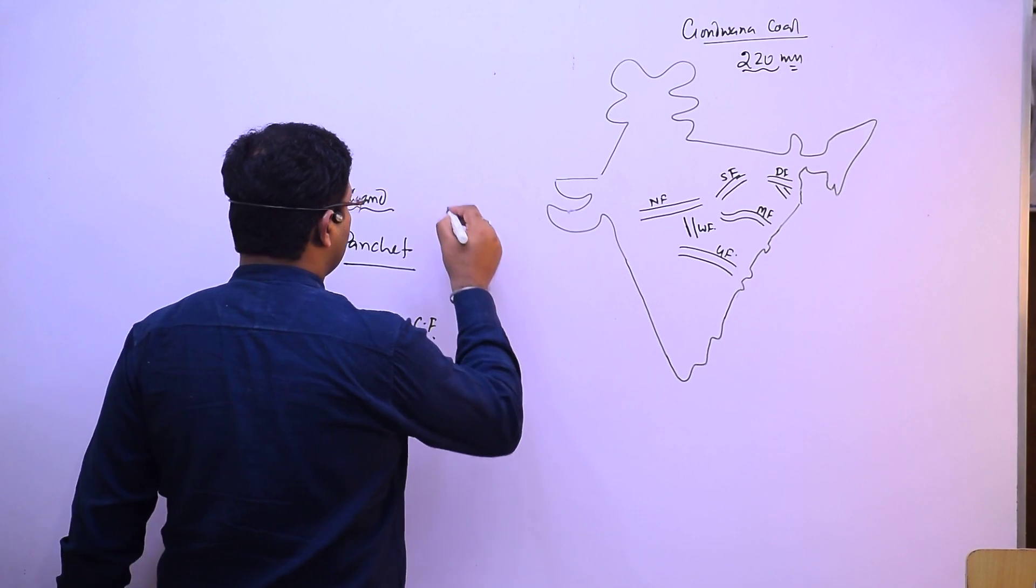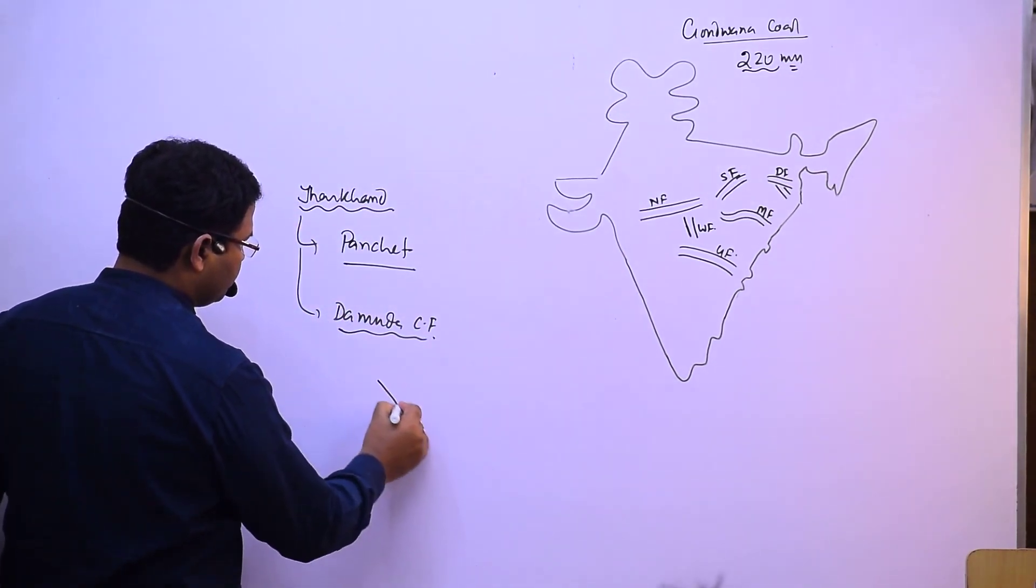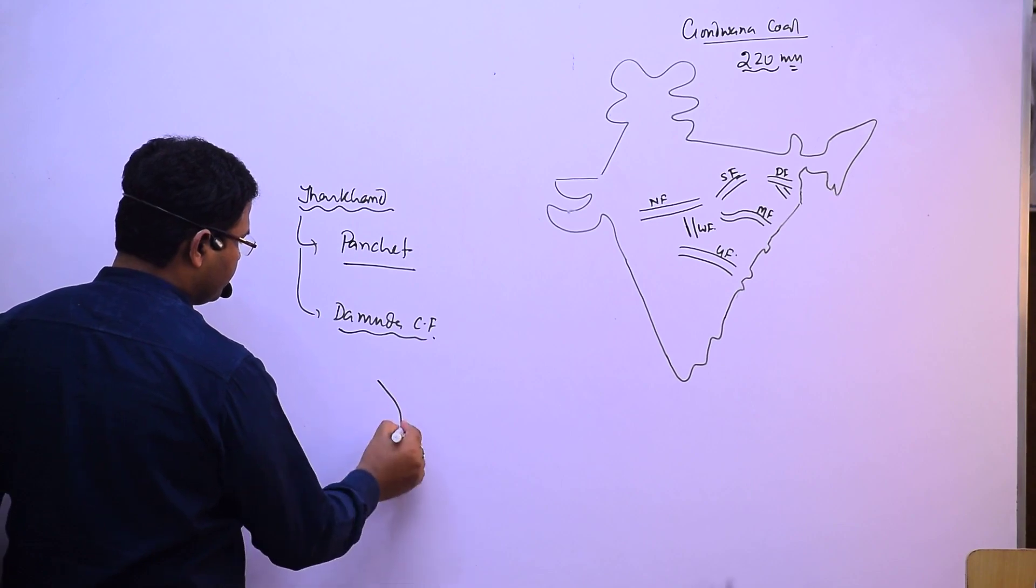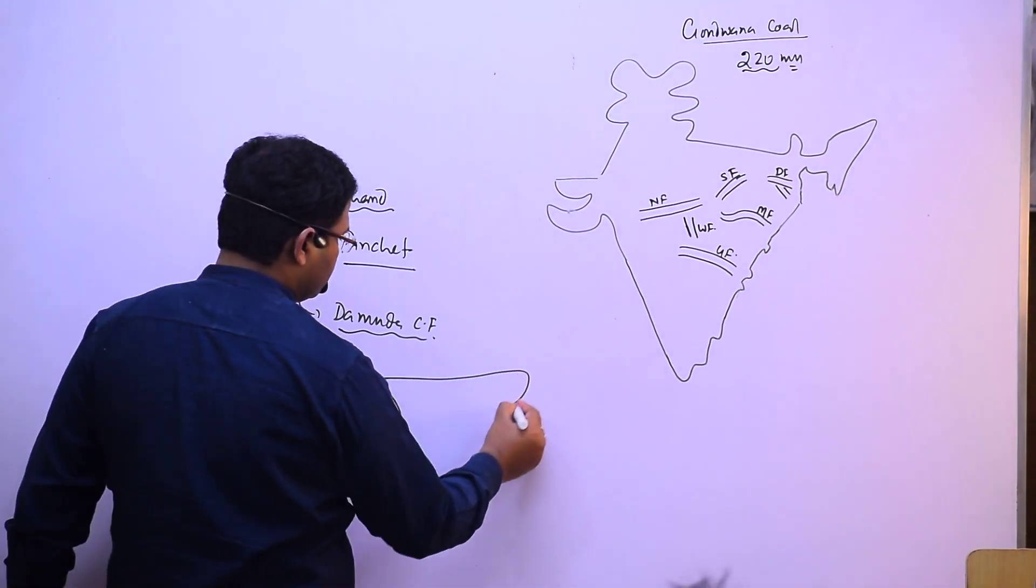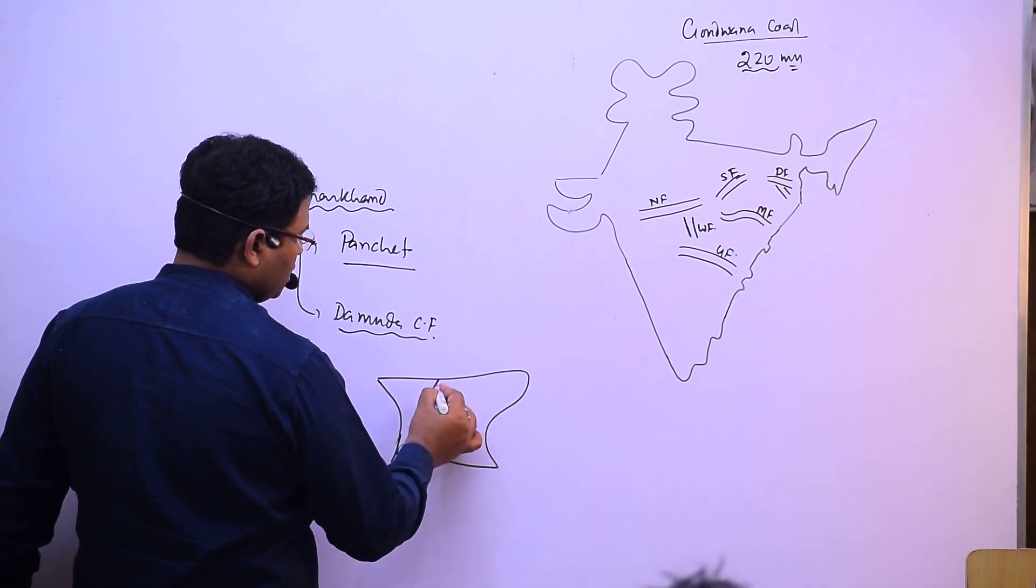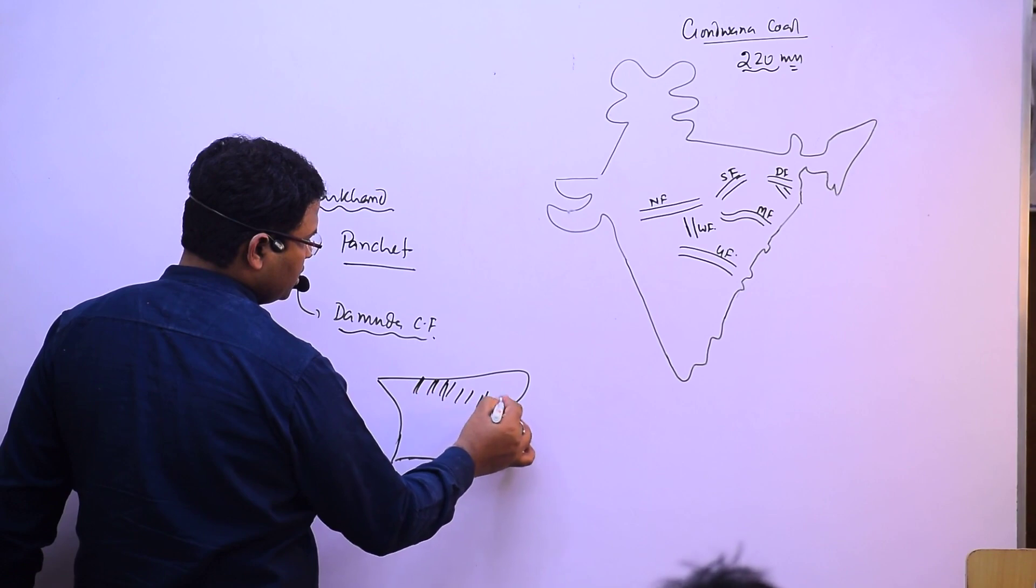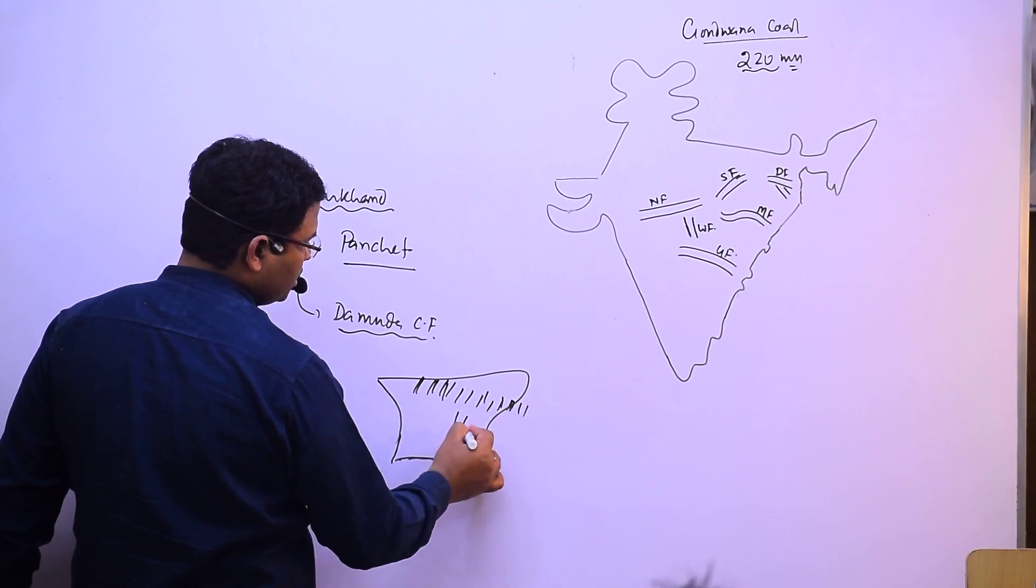The whole northern Jharkhand—if I show you the map of Jharkhand, there is what I said: this is Panchet, this is which one? Panchet, and this one is Damodar.